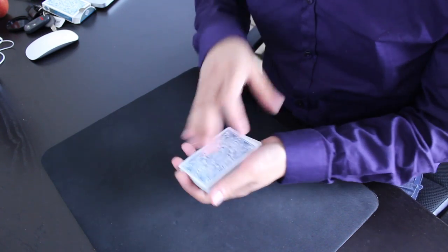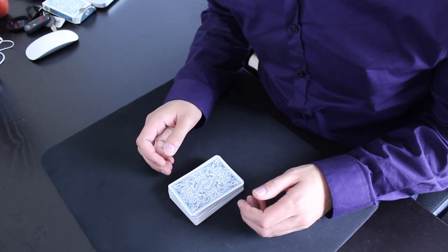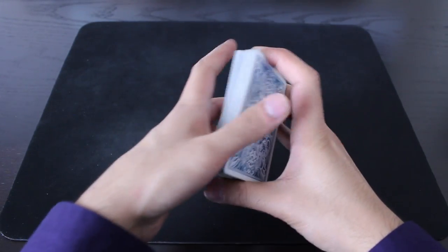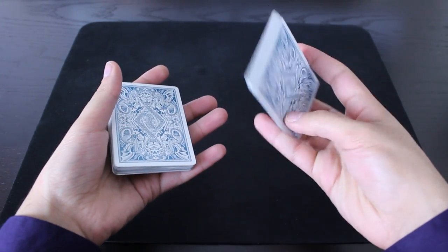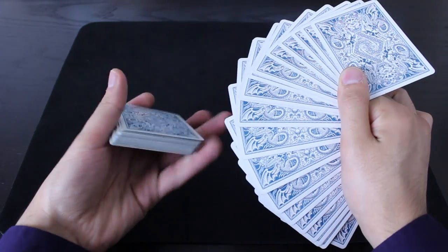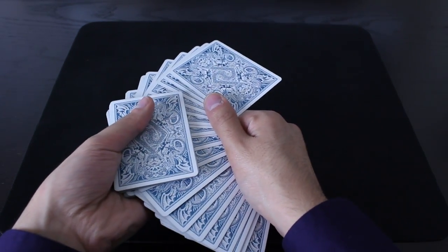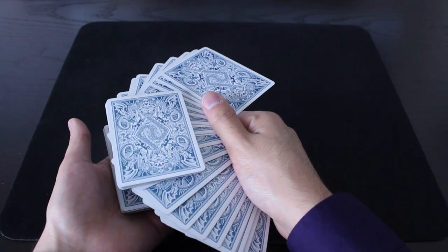Alright, I'll do it once more from a behind the deck angle so you can kind of get a better idea. And hopefully it'll help out. One more time, you're gonna cut off two thirds of the cards into your left hand. As you do a one handed fan with your right hand cards, you're gonna charlier cut with the left hand cards. Let the top packet fall on top of the fan. And then you do the flick.